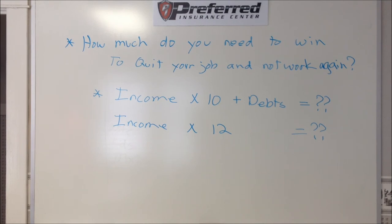Take your annual income times 10 and add your debts. What's that number? And do it for each person, not as a couple or anything like that.